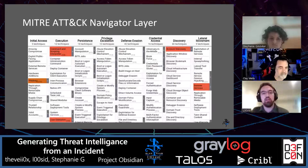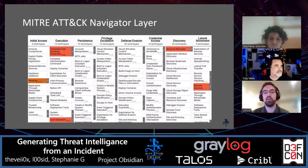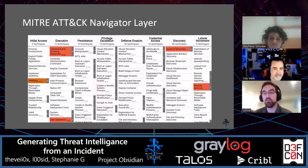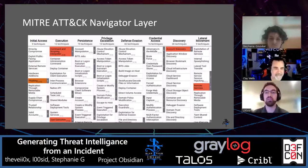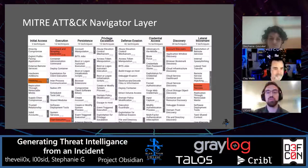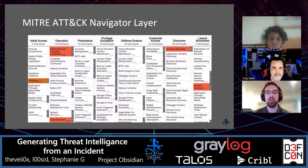The MITRE ATT&CK Navigator is a web-based tool that's free for annotating and exploring these matrices. You can visualize your defensive coverage and plan for red, blue, or purple team activities. This visual is a heat map of TTPs that were part of Kill Chain One — not every event or sub-method is on here — but there is a link at the end of the presentation, or you can search for the ATT&CK Layer Navigator and fill it out yourself.